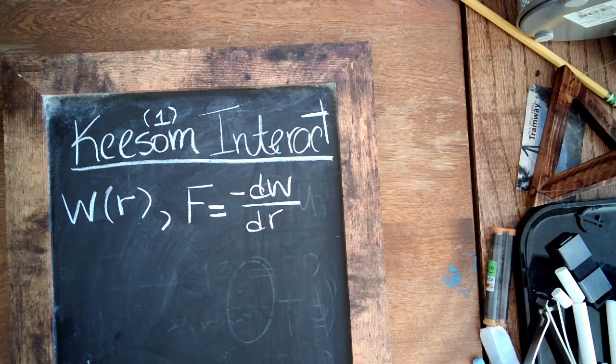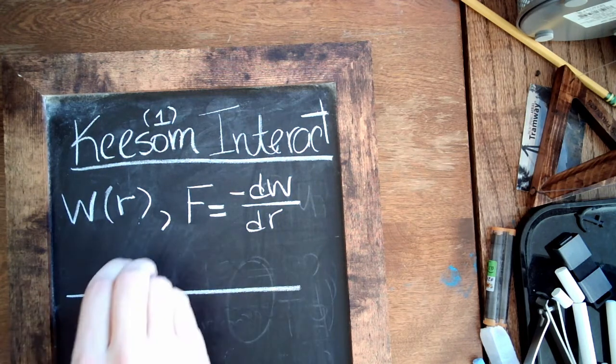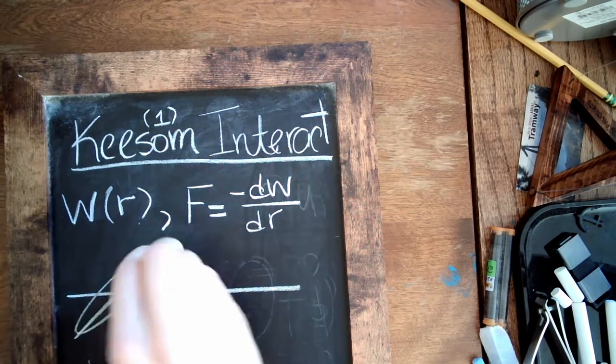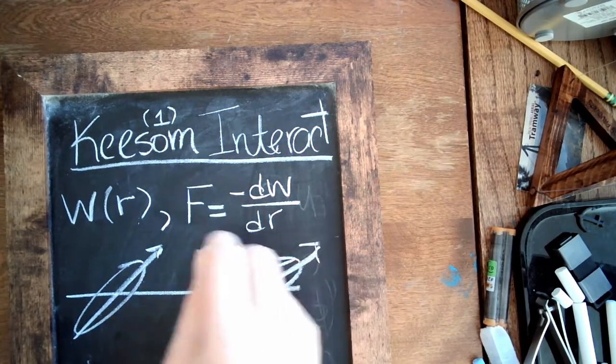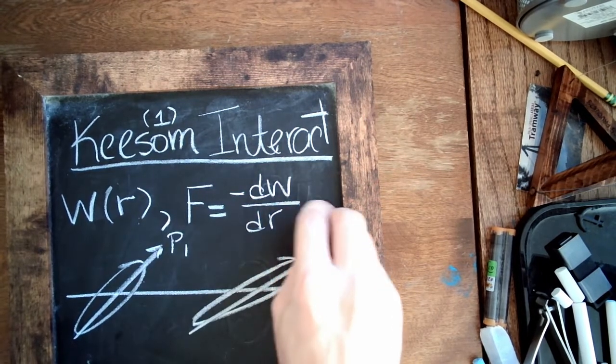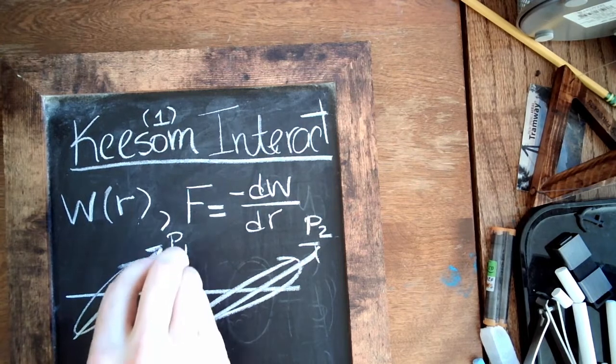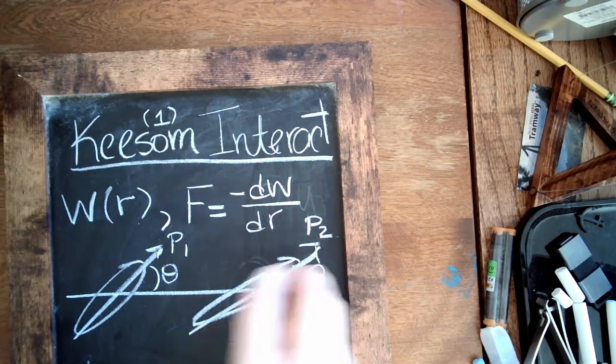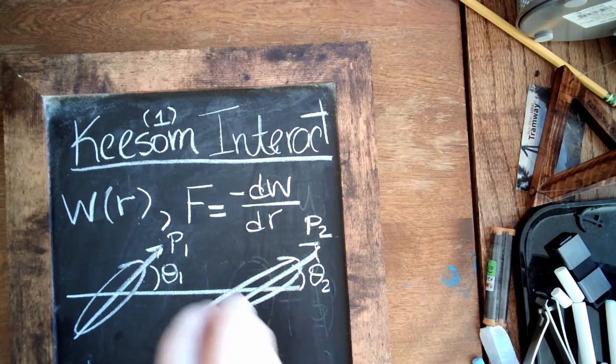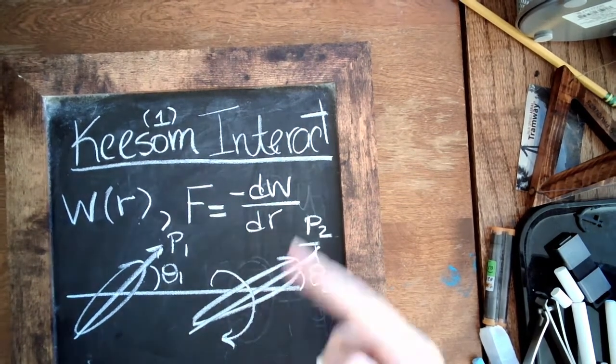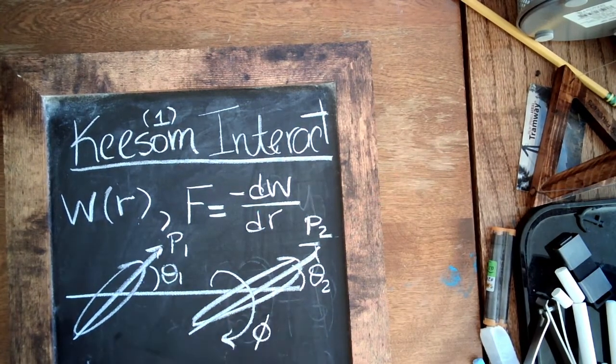So the picture we're going to try to put in our mind today is two dipoles that are going to be sitting at some angle to each other. We'll call the magnitude of them p1 and p2, and we can parameterize them with a few angles: theta 1, theta 2. We can also define this as a mutual angle—imagine rotating this around towards you—call that just phi, only need one of those.